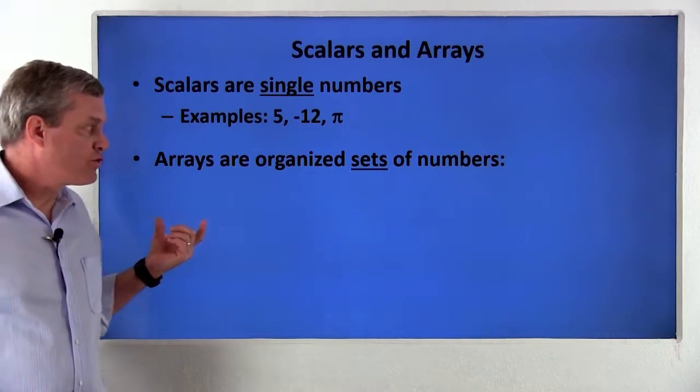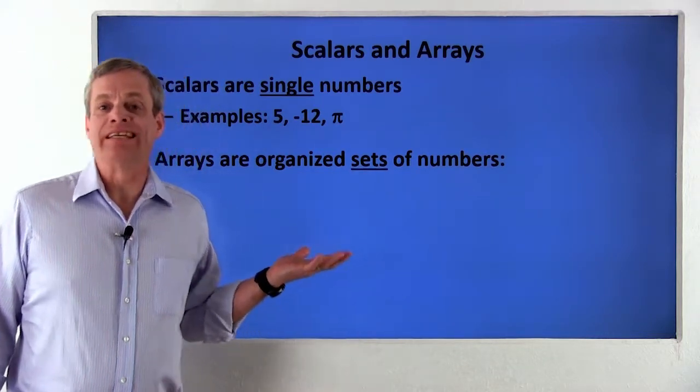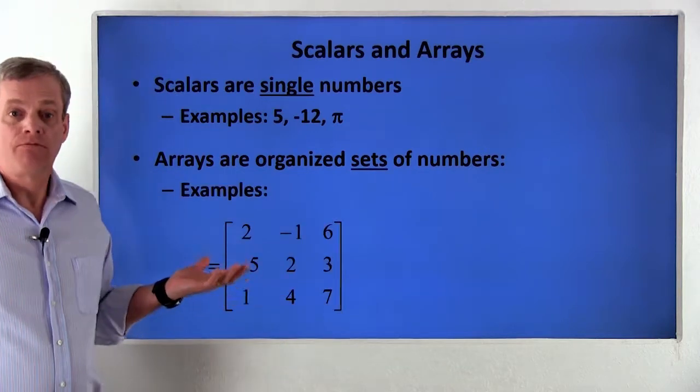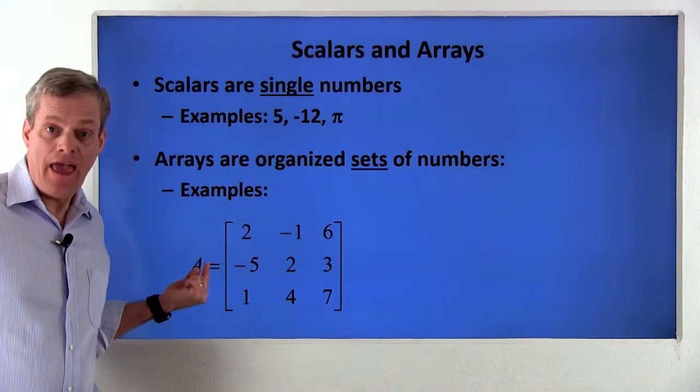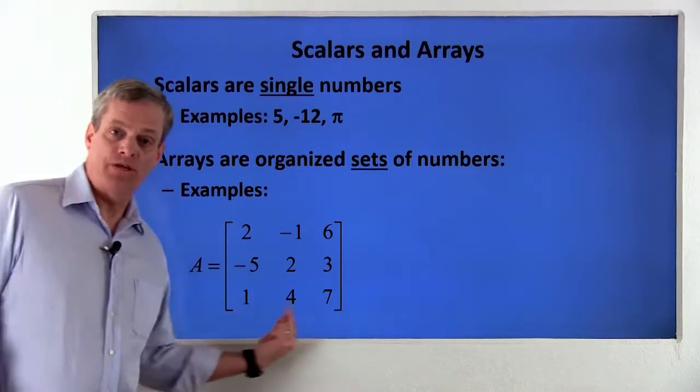Arrays are groups of numbers. That is, a given variable can contain many numbers. For example, this array A contains 9 numbers organized in 3 rows and 3 columns.